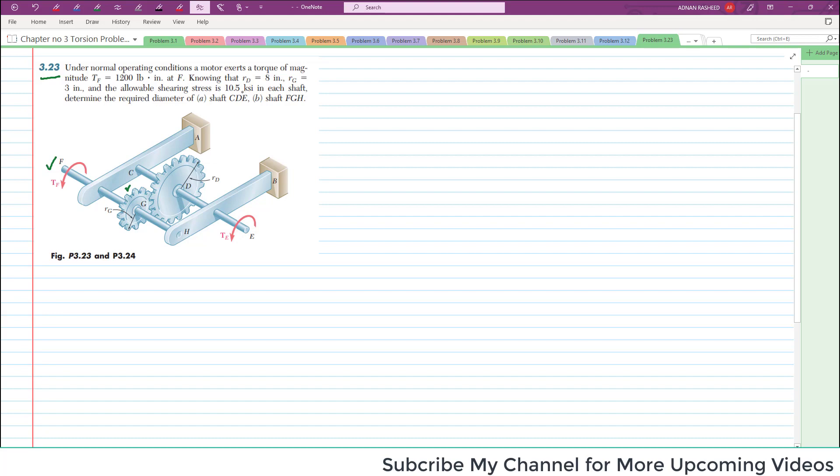The allowable shearing stress is 10.5 KSI in each shaft. So determine the shaft CDE. This is CDE shaft and you have to determine the diameter, and this is shaft FGH. Let's start with the given data.